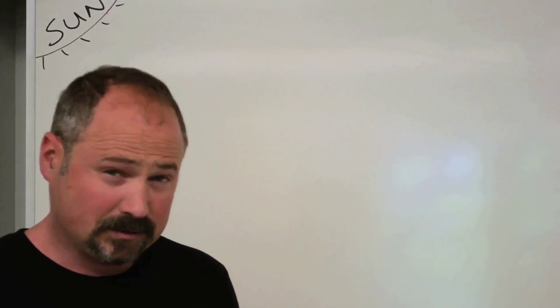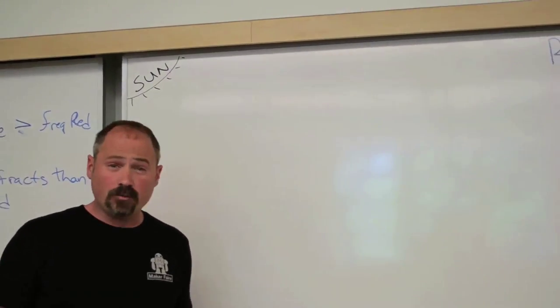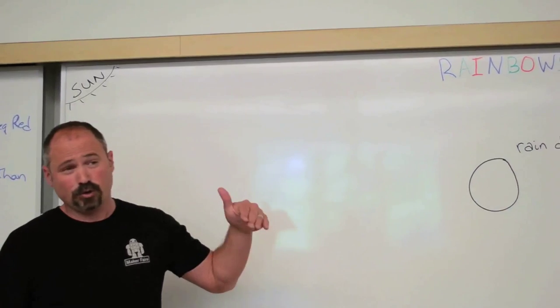Let's talk about rainbows. How are rainbows formed? Why, when you see a rainbow, does it have the order of colors that you see, that is blue, green, red?